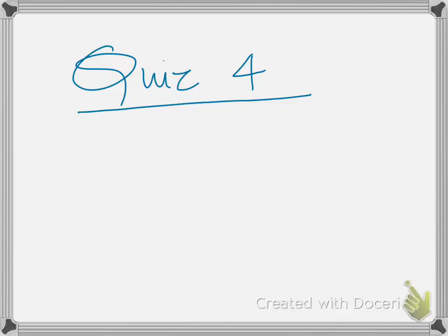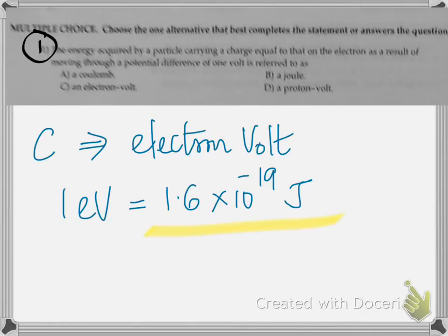Alright, answers to question number 4. First one, the energy acquired by a particle carrying a charge equal to that on the electron as a result of moving through a potential difference of 1 volt. That is the definition of electron volt. It is the energy acquired by an electron when it moves through a potential difference of 1 volt.